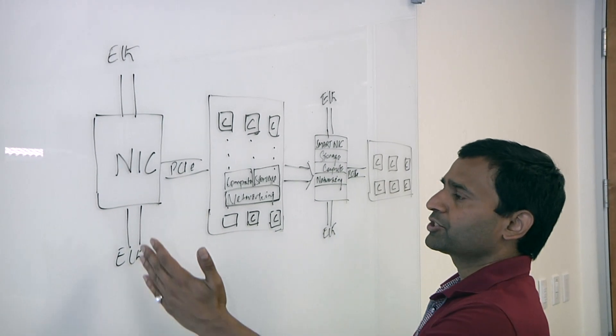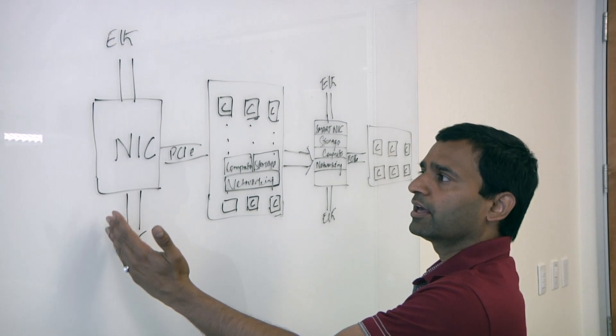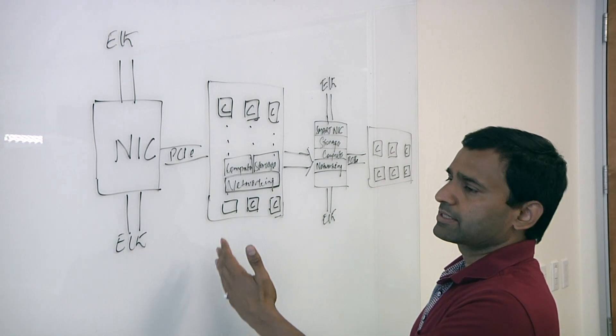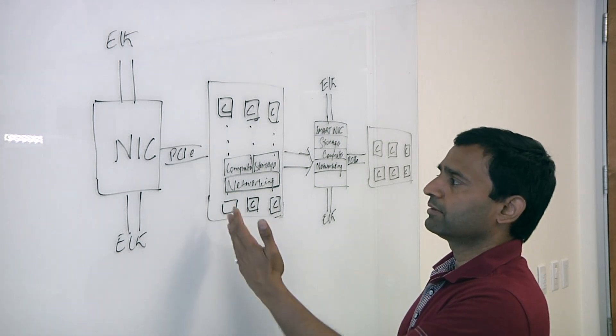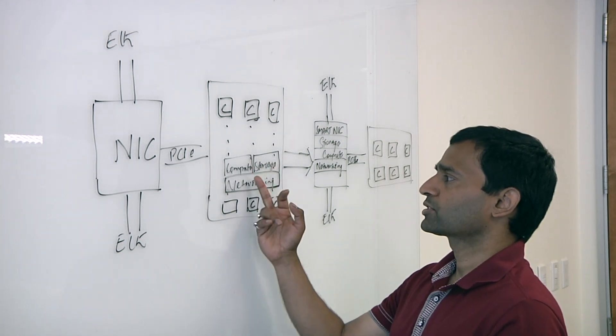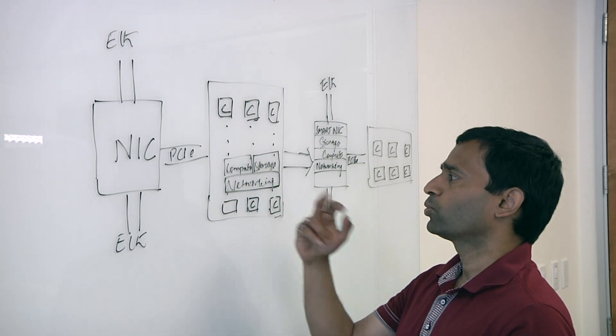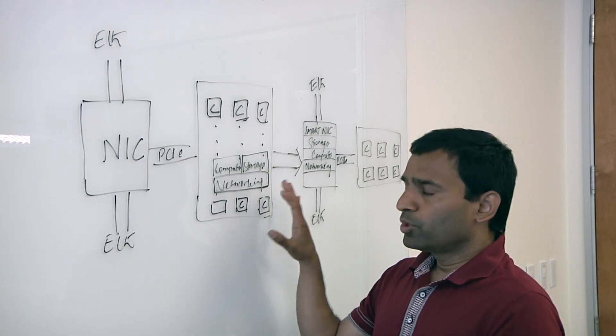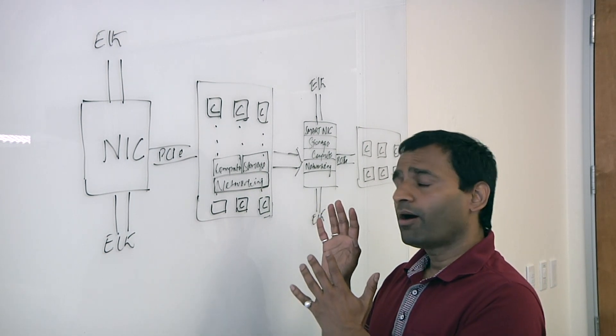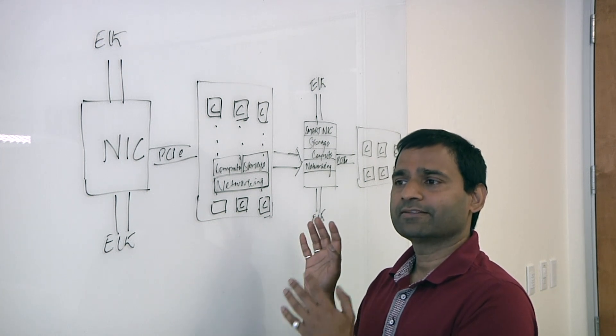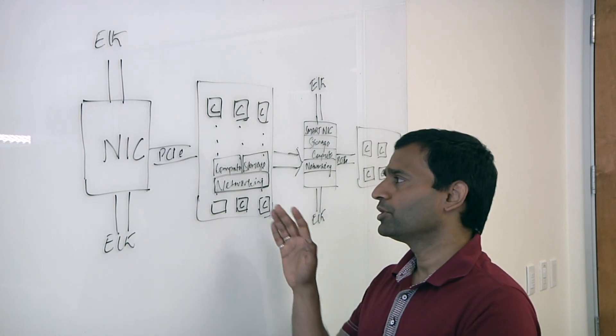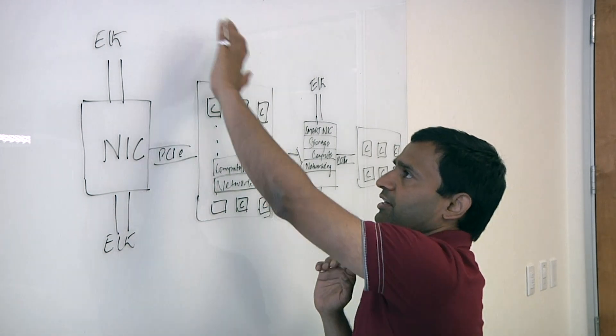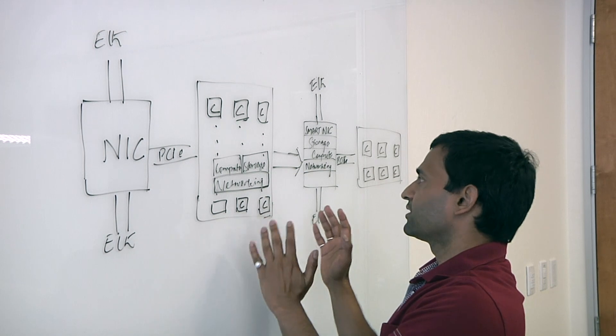So as you said, traditional NIC has been there for years, and in a traditional scenario, in a traditional card, I have abstracted it in three higher buckets of functions: compute, networks, and storage. So all these three would use CPU cycles for all the processing that happens, even data transfer, data manipulation. You name it, and they have to consume CPU cycles. So this is a traditional scenario, and see what happens on a smart NIC.